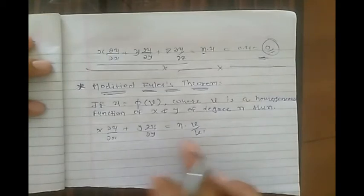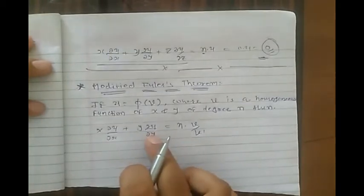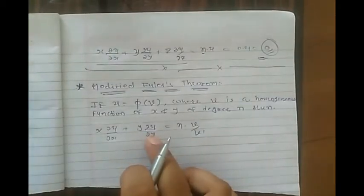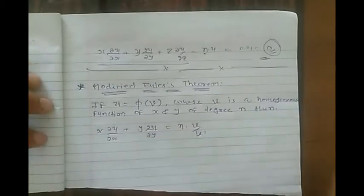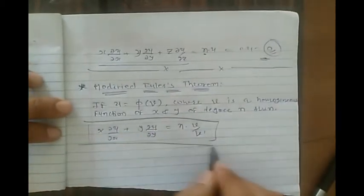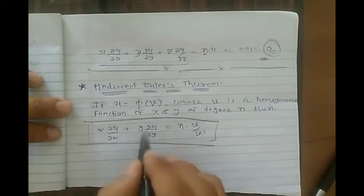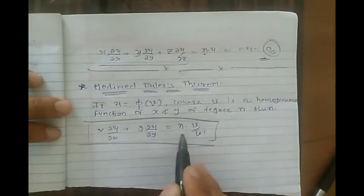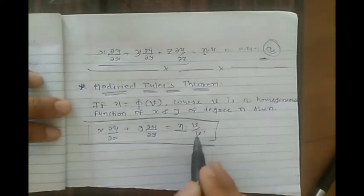First, I will discuss brief examples based on Modified Euler's Theorem, then we will prove the statement. You just have to remember that x ∂u/∂x + y ∂u/∂y = n · v/v′.